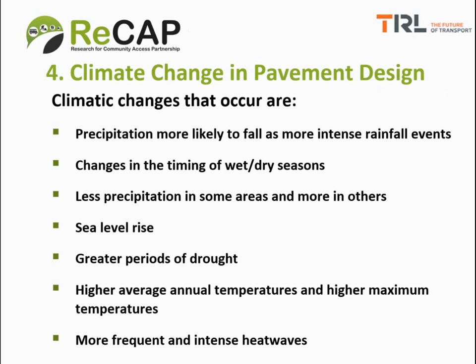The climatic changes already occurring include: precipitation more likely to fall as more intense rainfall events; changes in the timing of wet and dry seasons; less precipitation in some areas and more in others; sea level rise affecting countries with coastal roads including low-volume roads near coastlines; greater periods of drought in some areas; higher average annual temperatures and higher maximum temperatures; and more frequent and intense heat waves in other parts of the world.